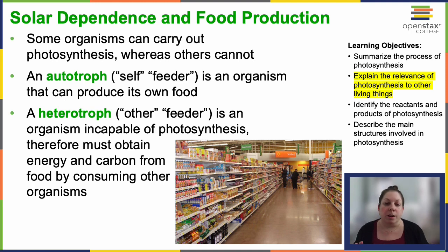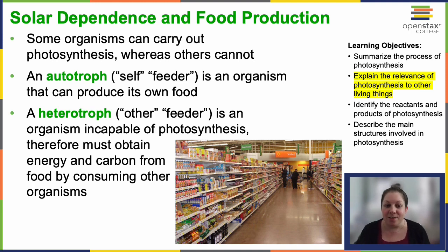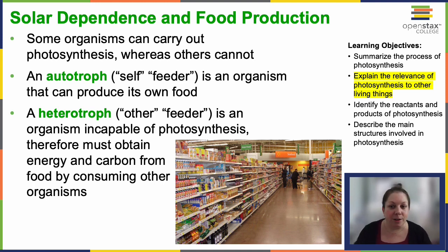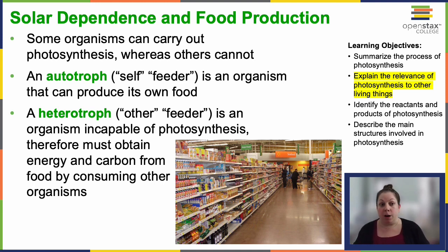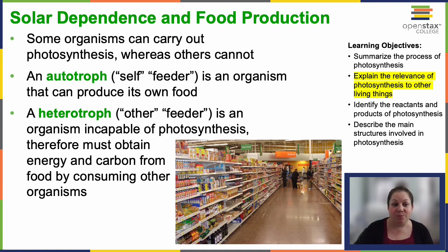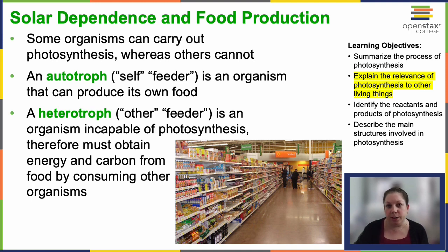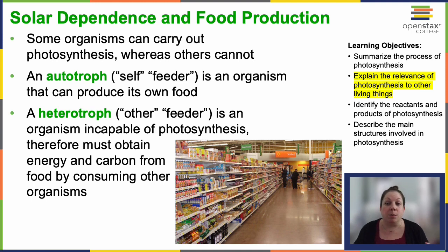For heterotrophs, the word also derives from the Greek. Hetero means other, and trophic means feeder — so other-feeder. You have to eat other things. So even when an organism eats another organism, ultimately it's tracing its origins back to some autotroph. Maybe you had a hamburger, but that cow ate grass. So ultimately, those carbohydrates you're consuming and the energy that powered that animal goes back to photosynthesis and an autotroph at some level.